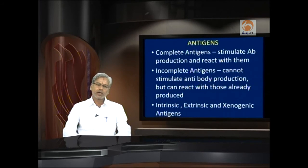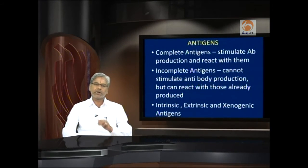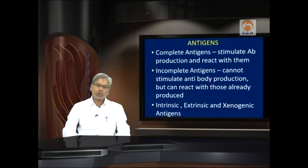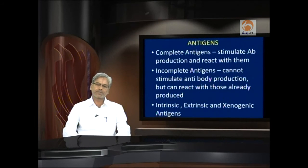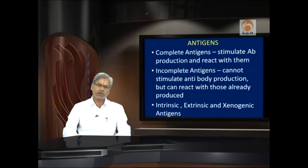Whenever the immune system is hyperactive by an error, it tries to produce antibodies against our own antigens — such antigens are intrinsic — and in such a case we get autoimmune diseases. Extrinsic antigens are those coming into our body from external sources. Xenogenic antigens are specific cases where antigens are present in a number of phylogenetically related individuals — for example, cardiolipins of the human cardiac system are present in a number of mammalian species. Such antigens are called xenogenic antigens.